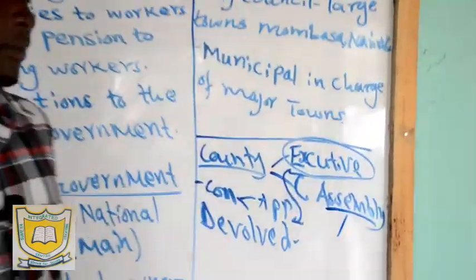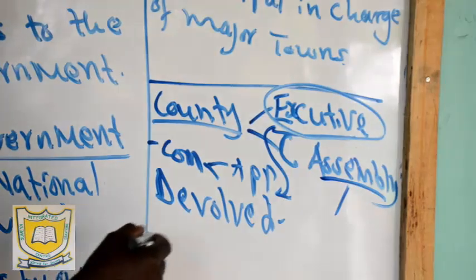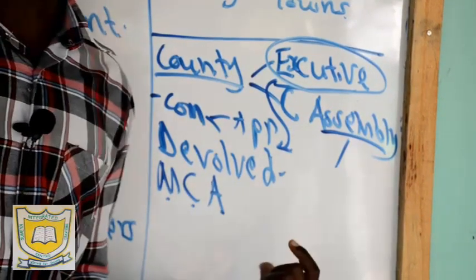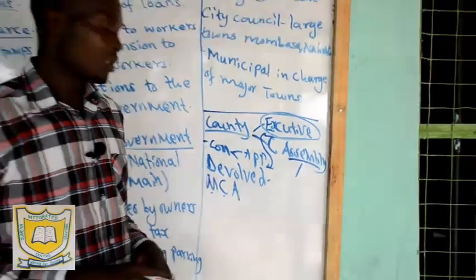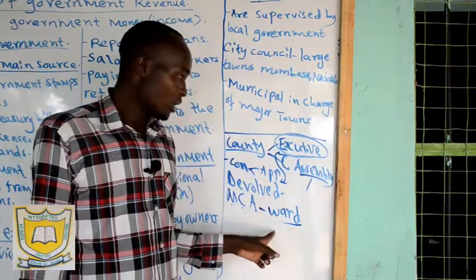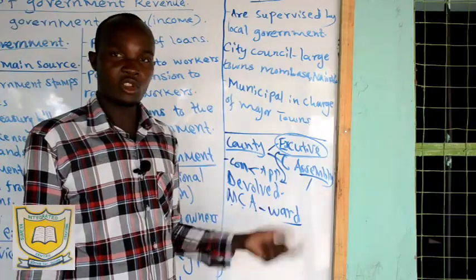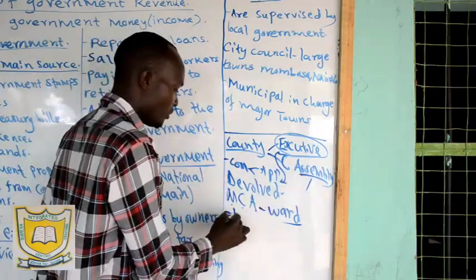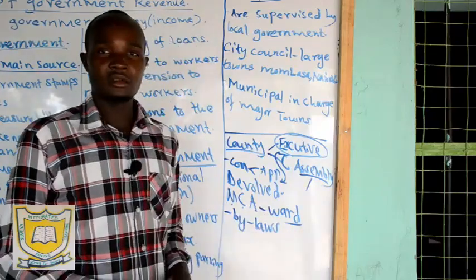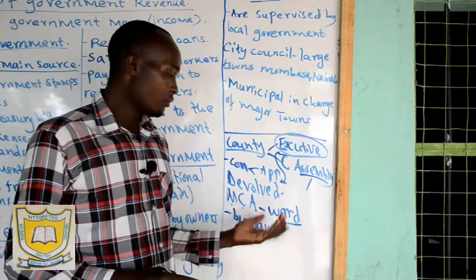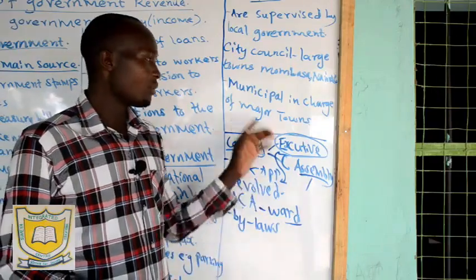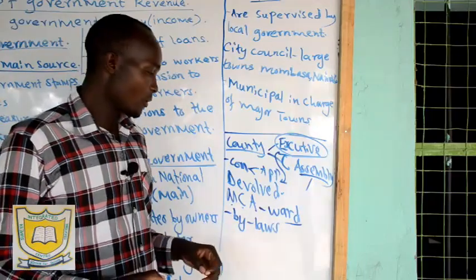The other arm of the county government is the county assembly. In the county assembly we have Members of the County Assembly — MCAs — who are elected by registered voters. They represent wards at the civic level. The county assembly is just like the National Assembly but at the county level. Its main role is to make bylaws — we call them bylaws because they only affect the counties. Each county may come up with laws to govern that county.